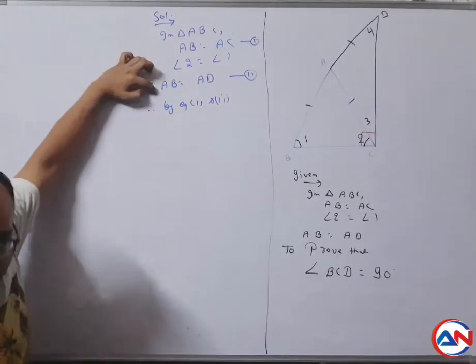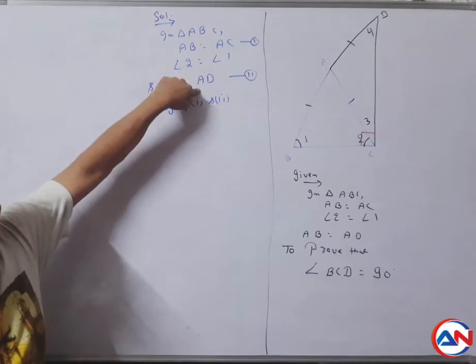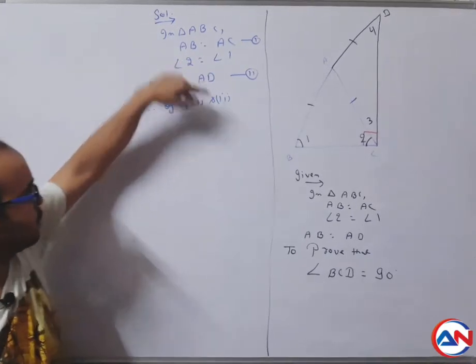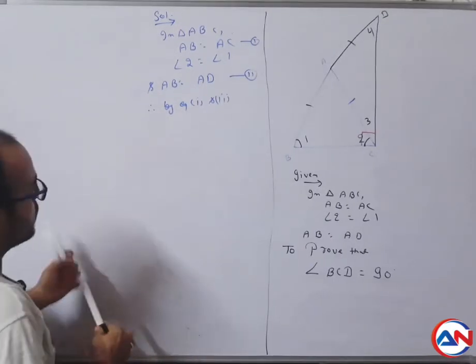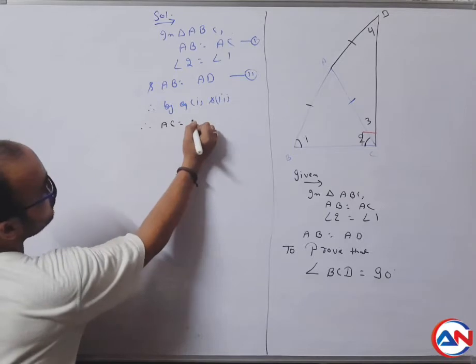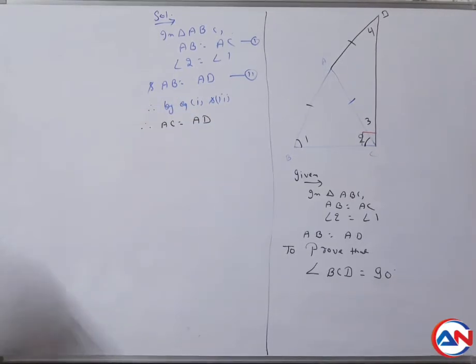LHS and RHS are equal. Therefore, AC equals to AD. This is transitive property. Question solved?